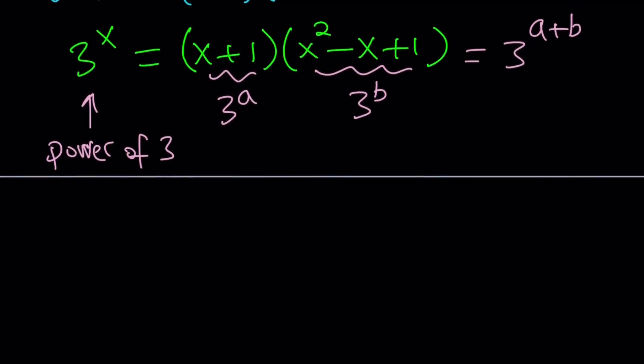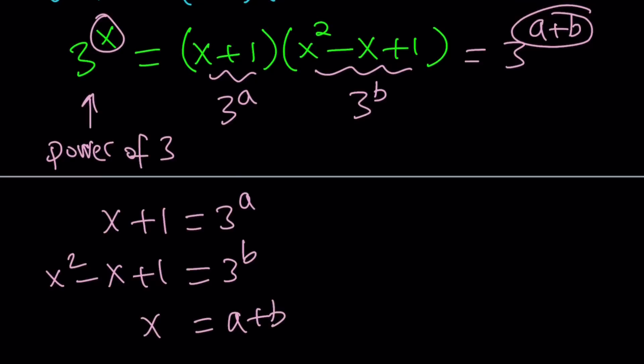Let's go ahead and write this down. Even though we introduce more variables, this is good because now we get a system which we can kind of figure out, simplify. So, this is my system. x plus 1 is equal to something, and x squared minus x plus 1 is equal to something else. Notice that both of these are powers of 3. And also, I have one more equation, which is really nice. x equals a plus b. So, this is my system. I have three variables and three equations.